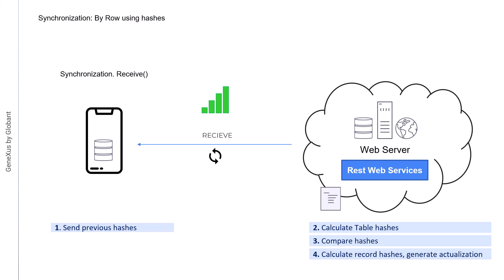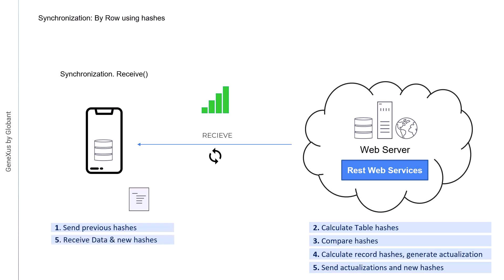For each action to perform — insert, update, and delete — a list is prepared. The server sends the list with the new data to the device. The device then receives the data and saves the hash of each table. Finally, their lists are processed in order. For the new records, an insert is made in the database, and if it fails due to a duplicate key, an update is made. For the records that have been changed, an update is made, and if there are no records, an insert is performed. A delete is run for the deleted records.